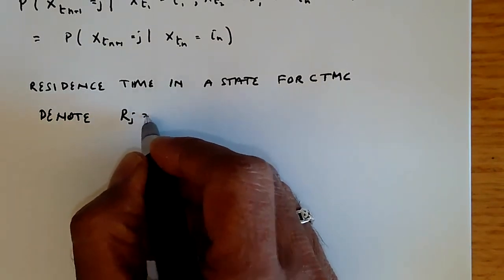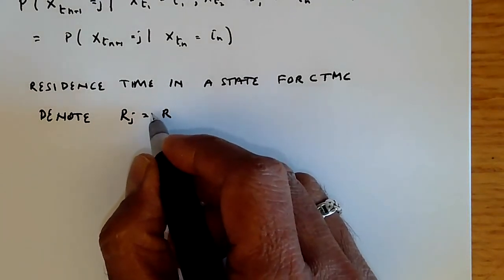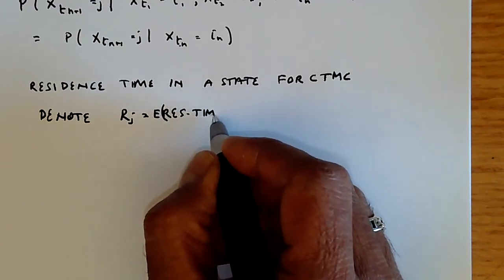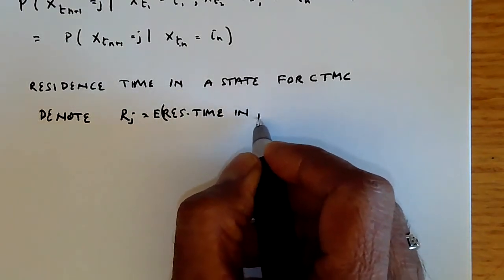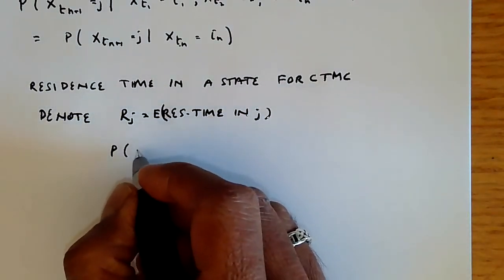So that if you denote the residence time in state j, R_j is the residence time in state j, the expected residence time in state j,